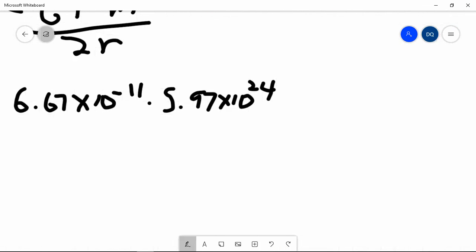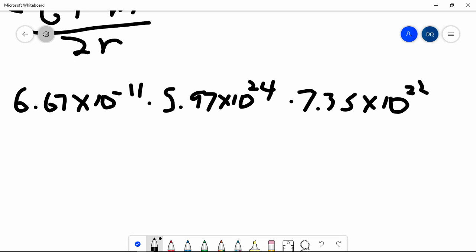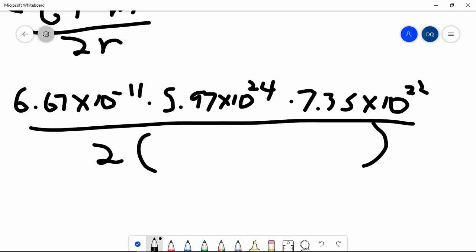And the mass of the moon is 7.35 times 10 to the 22. And then we've got to divide all of this by 2, and also divide it by the distance between the center of the Earth and the center of the moon.